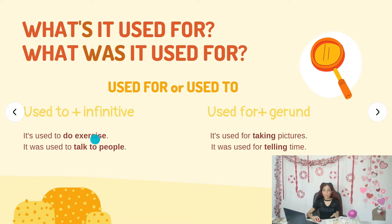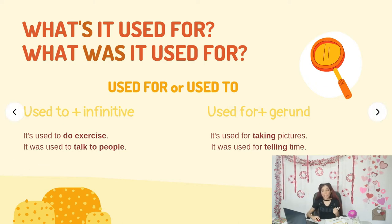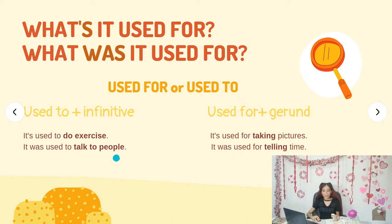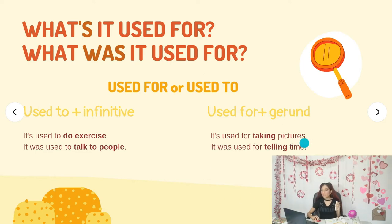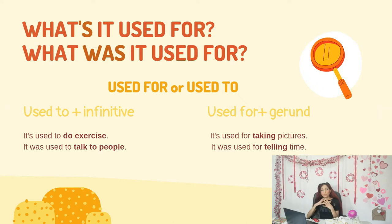In the present, with the apostrophe, the verb 'to be' is in the present: 'it's used to turn on or off the air conditioner.' If I show you an old gadget, you'd say 'it was used to talk to people' — because it's not used anymore, it's in the past. The verb 'to be' is in the past. For 'used for' with the gerund: 'it's used for taking pictures' — the verb is in the gerund. In the past: 'it was used for telling time.'